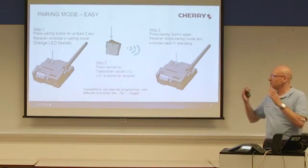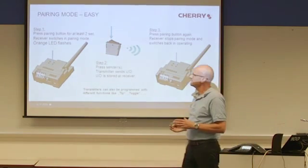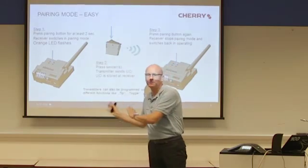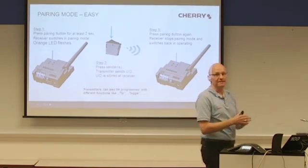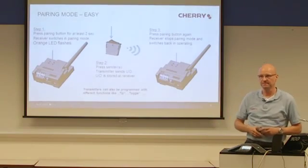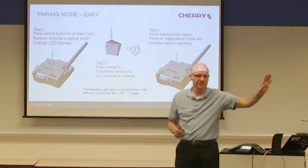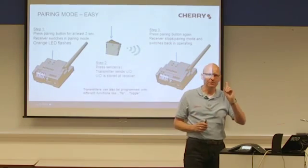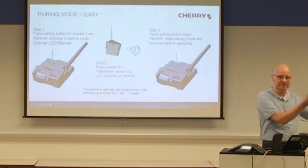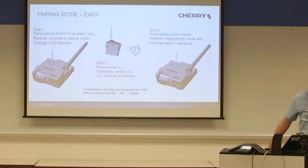To summarize easy mode: press the pairing button on the receiver to bring it into pairing mode, press the sender to pair it, then press the pairing button again. The receiver switches back to operating mode and now reacts only to the paired sender. It collects all other RF signals in the air but only acts when it gets a signal from a paired sender — all other signals are ignored.